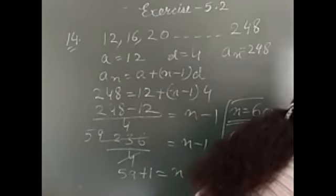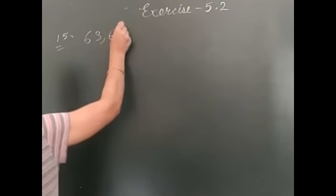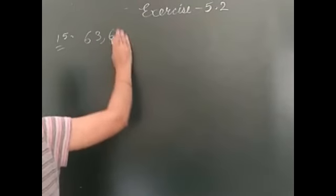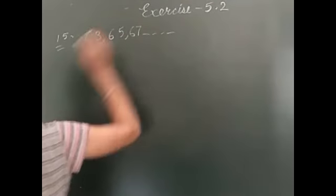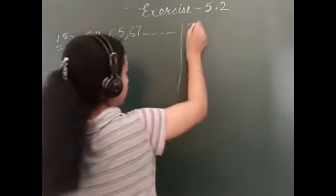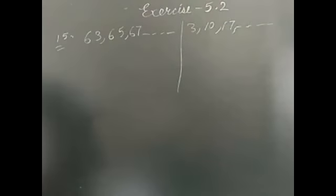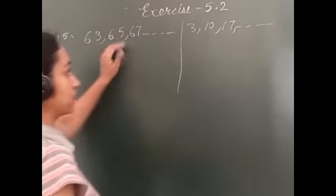Most very important question this. So, now, we have to start with our question number fifteen. For what value of n are the nth terms of two APs? Question number fifteen. We are given two APs. Sixty-three, sixty-five, sixty-seven, and so on. And, second AP is three, ten, seventeen and so on. These are the two APs and we have to find out the value of n. For which, the nth term of this and this will be same.